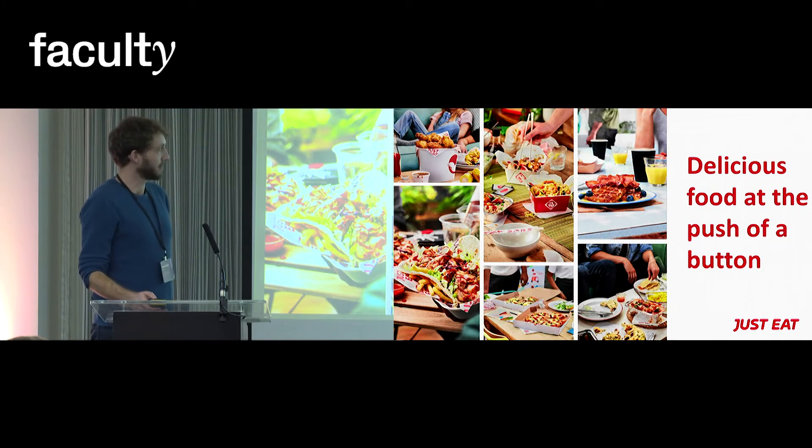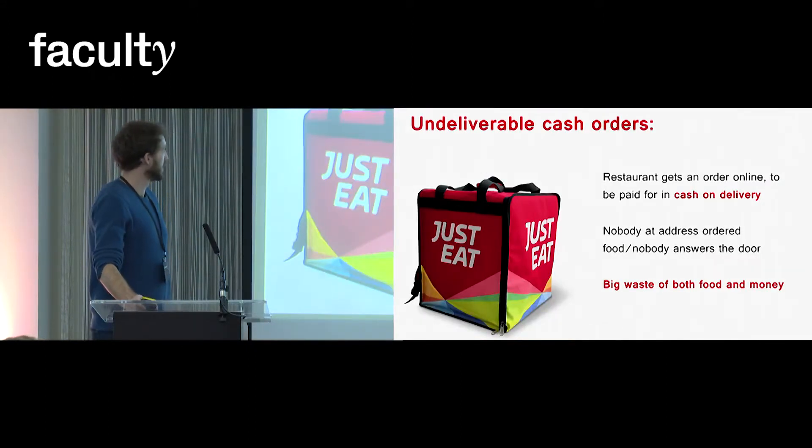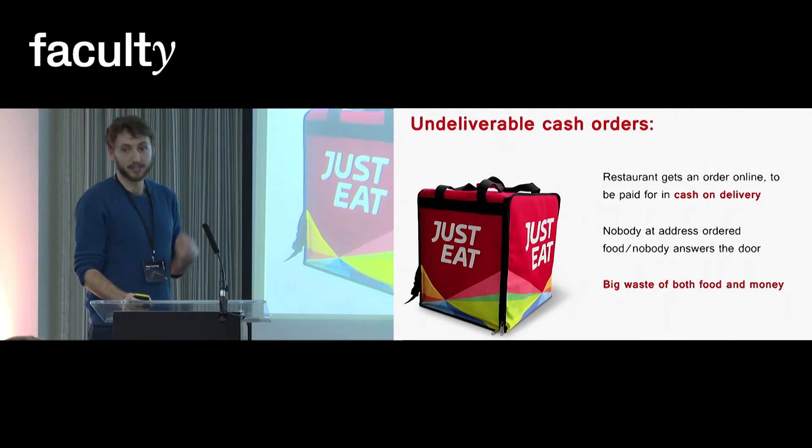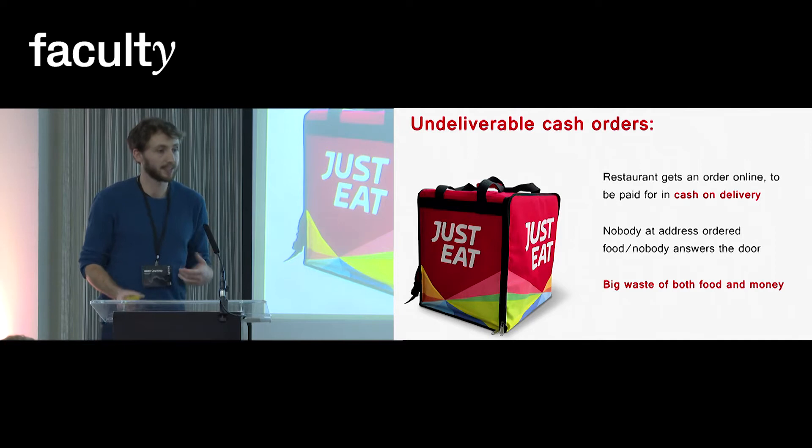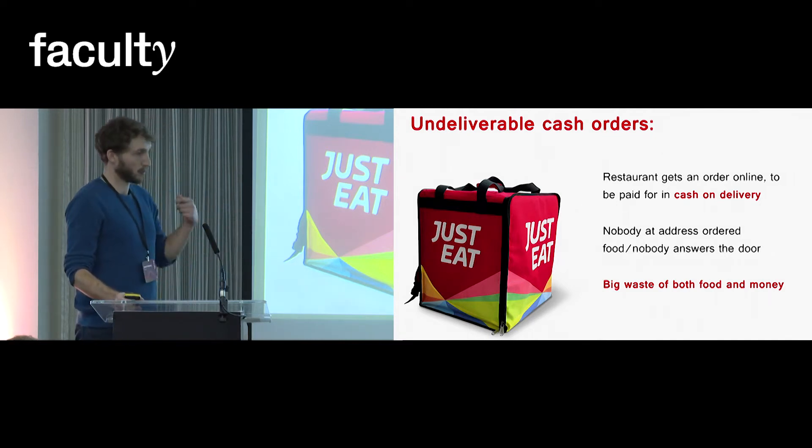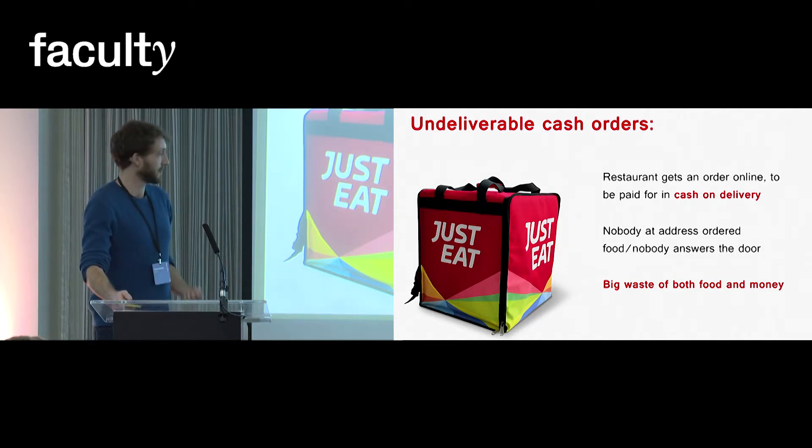What about when things don't go to plan? A problem JustEat I'm particularly interested in is undeliverable cash orders. This is when an order is made online to a restaurant, the order is going to be paid for in cash when the driver arrives at the address, but when they get there they find that actually nobody ordered food there or nobody opens the door. This is obviously a big waste of both food and money.